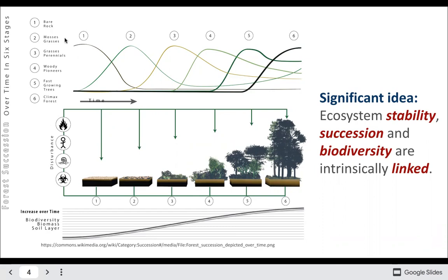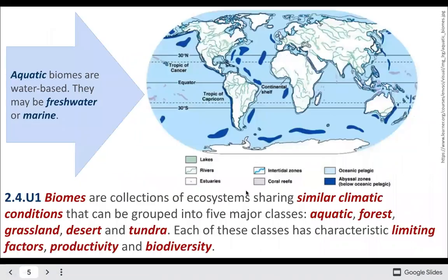You can see how the abundance of different materials changes over time. We lose all the available bare rock and eventually get more mosses, grasses, and woody plants until eventually we have a climax forest, along with a combination of other factors as well.